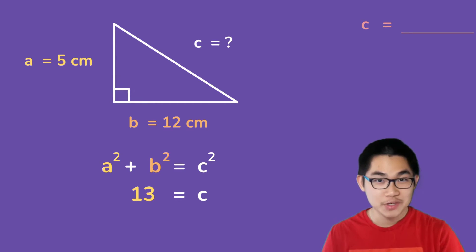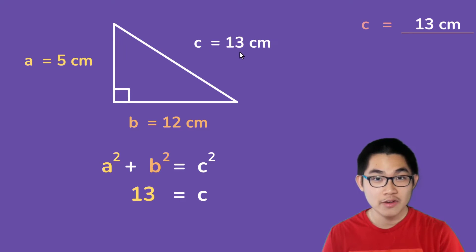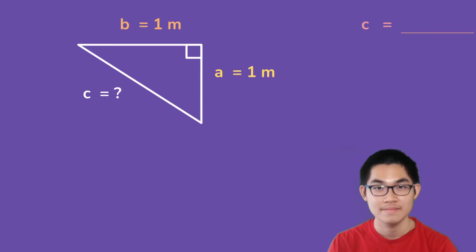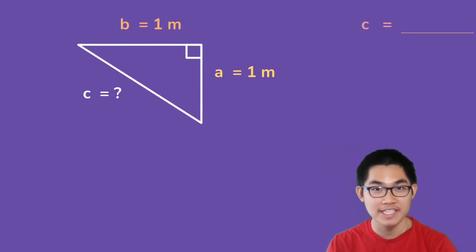So in this triangle, c is 13 centimeters, and don't forget to include your unit at the end. Let's do another example.